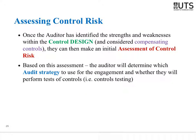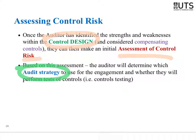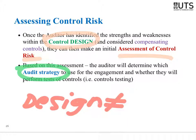We assess control risk based on design effectiveness, then decide whether to do controls testing or substantive testing. Only test controls if control risk is low or medium; if high, go straight to substantive testing. It is also possible for a control to look good in design but not operate effectively. In that case, after testing you would shift to more substantive testing because you can't rely on the control.